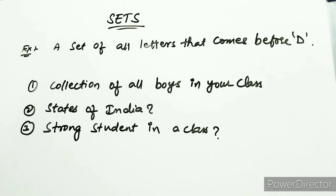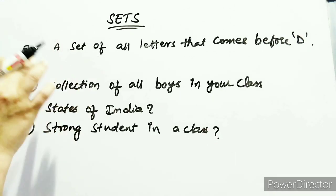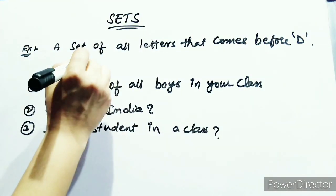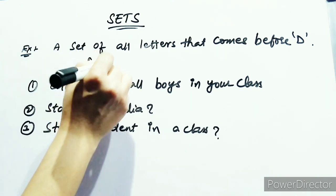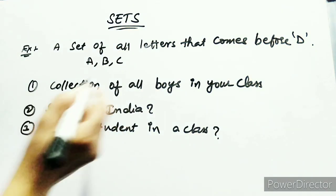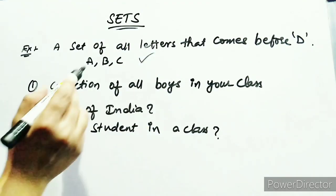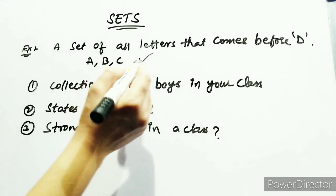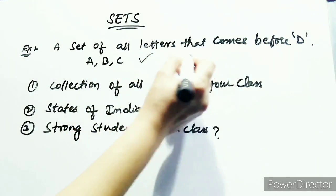Next, we will discuss how to find which is a set and which is not. A set of all letters that come before D — we can find all the letters that come before D. You will get A, B, C. So this is called a set because it is well defined and distinct.